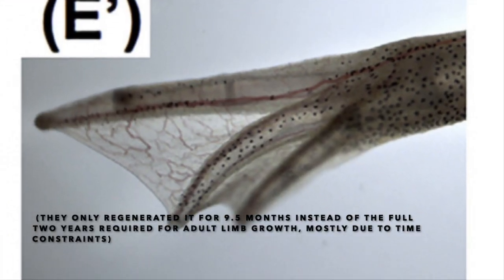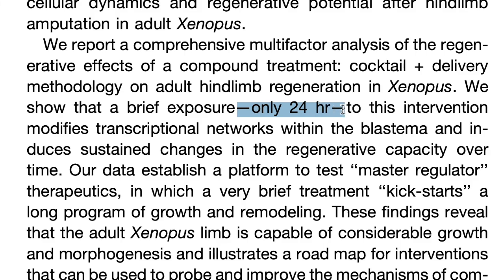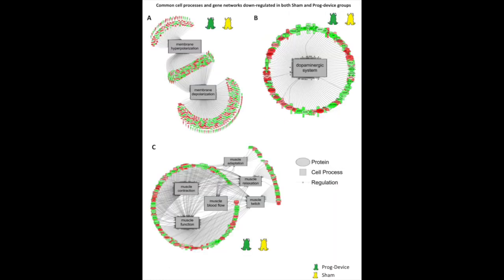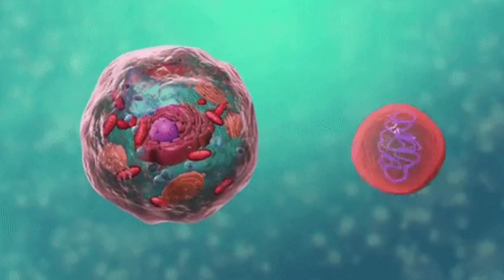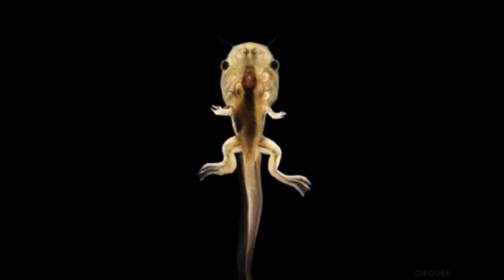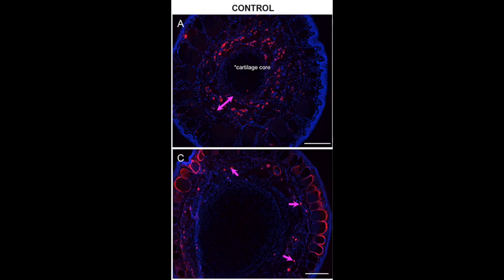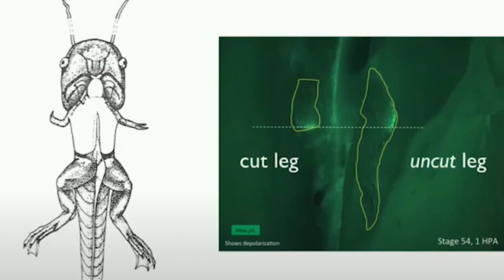In this case, the frog regenerated everything up to the webbing on the limb and regained full mobility. The coolest aspect of this is that the bioreactor was only applied for 24 hours, and it stimulated the entire 9.5 months of growth. This is because the progesterone causes an upregulation and downregulation of certain cell processes, and one of the most important ones is related to the resting potential of the cell membrane. This change in the resting potential is what stimulates a pro-regenerative bioelectric profile. These processes essentially tell the frog to go through the same process as it did while growing from a tadpole to a frog, so now it regenerates the limb instead of scarring over. You also see cross-limb communication between the cut and the uncut leg, but this isn't fully understood yet.